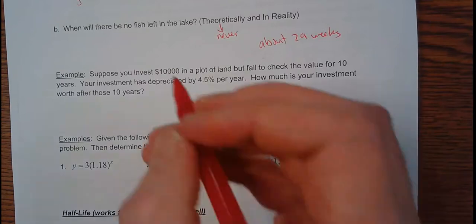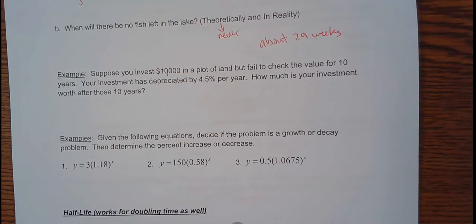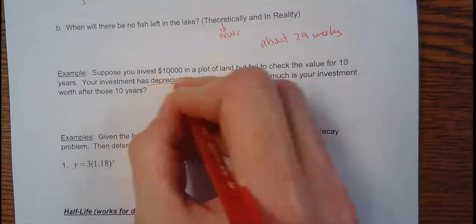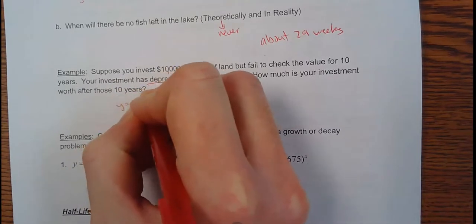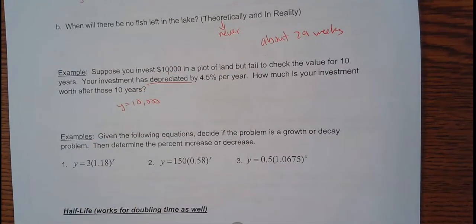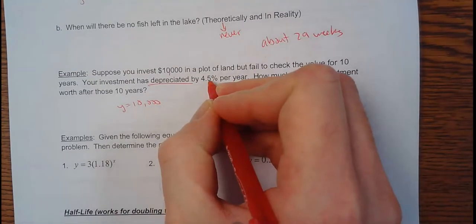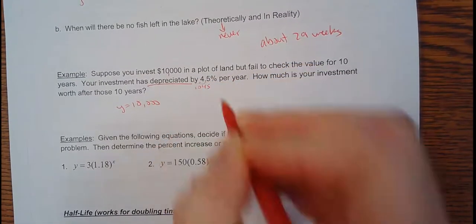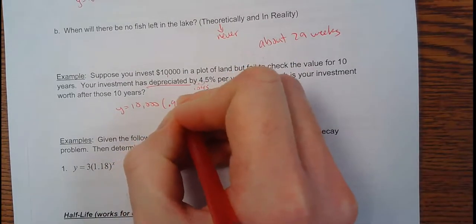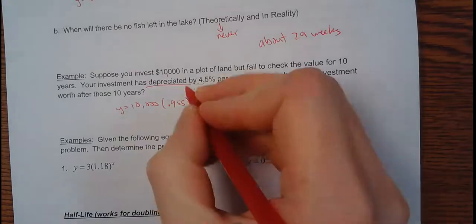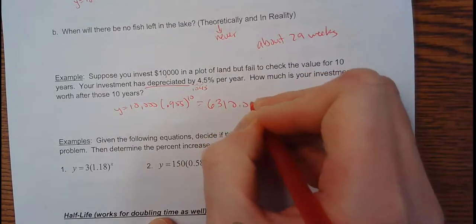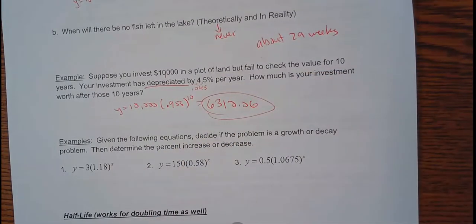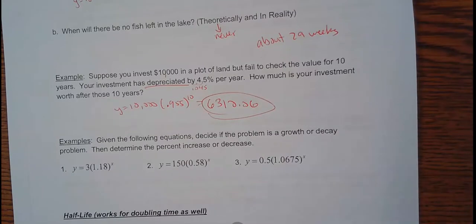Suppose you invest $10,000 and apply to land, but fail to check the value for 10 years. Your investment has depreciated. So, it's gone down. For some reason, nobody wants this land anymore. Four and a half percent per year. How much is your investment worth after those 10 years? Well, your initial value was $10,000. You lost 4.5%. So, move that decimal twice. That's 0.045. And then subtract from one. So, that's 0.955. You're keeping 95 and a half percent. And then we want to know after 10 years. So, type this in the calculator. So, now that $10,000 plot is only worth about $6,310 now.